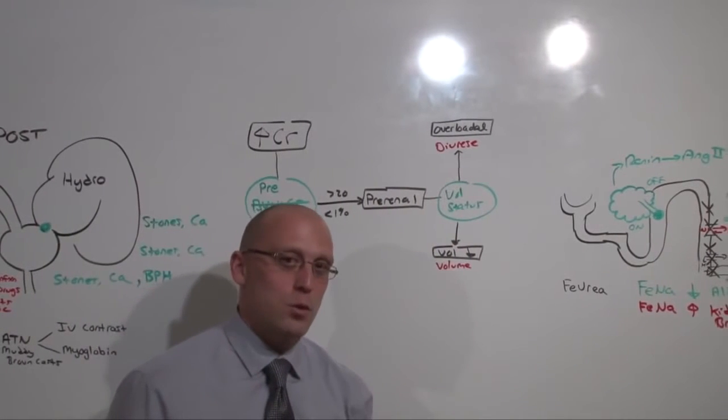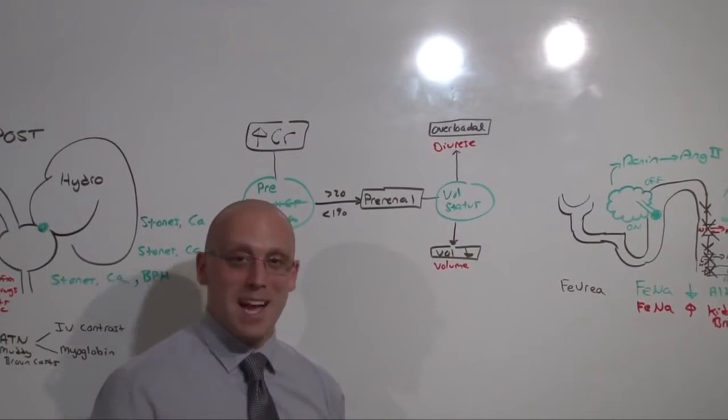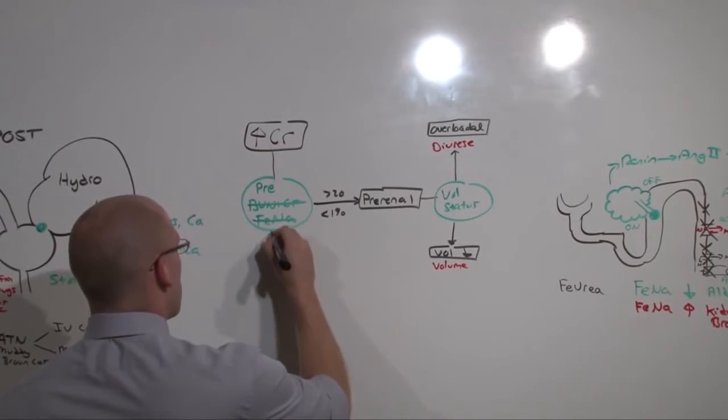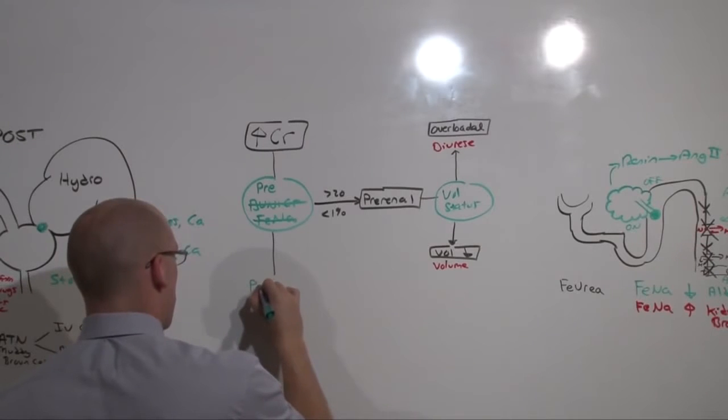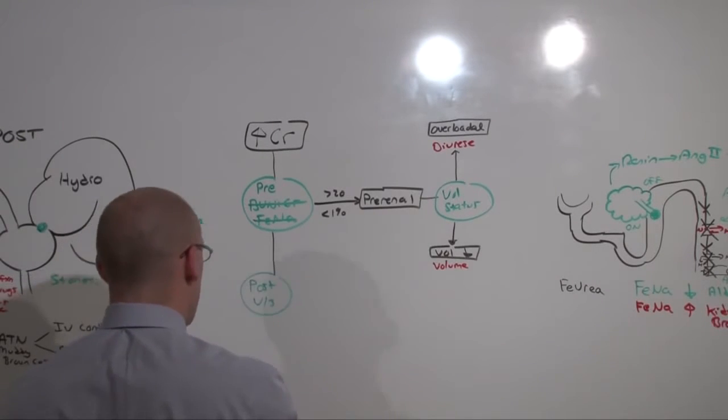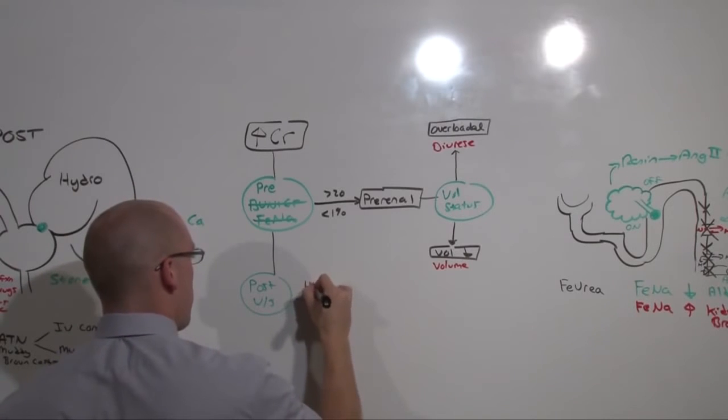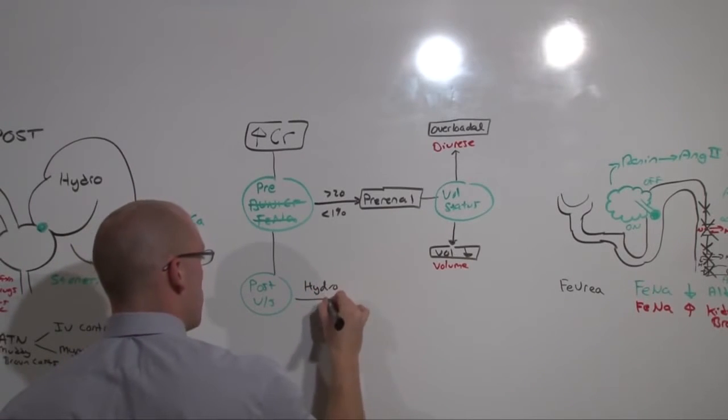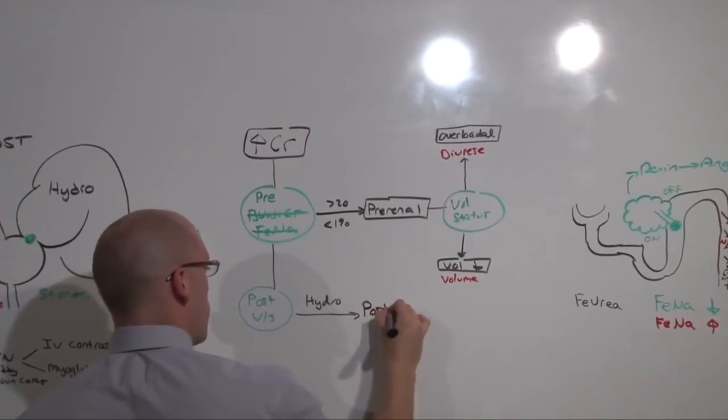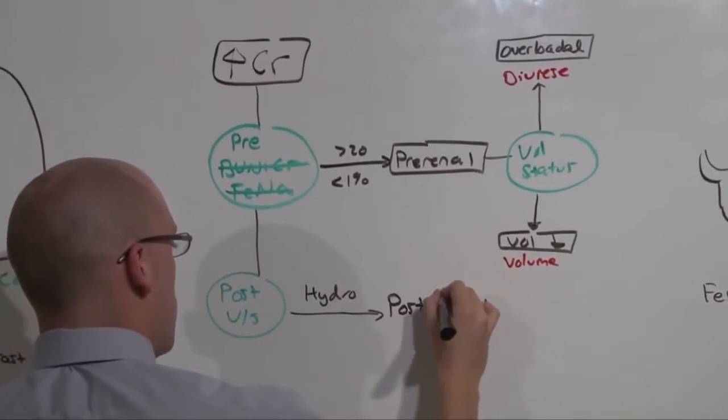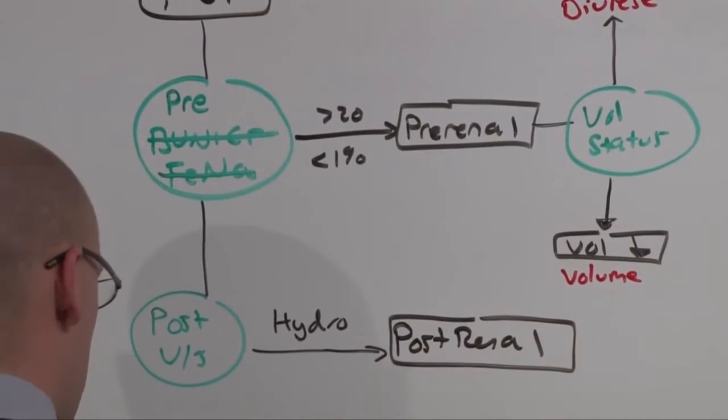At the same time, you're not going to be foolish and just assume that it's not obstructive. So, of course, you're going to at least consider post-renal failure. You're going to get an ultrasound. Because, if you see hydro, whether it's hydronephrosis or hydro ureter, you have a post-renal obstruction. And, you have to relieve that obstruction.